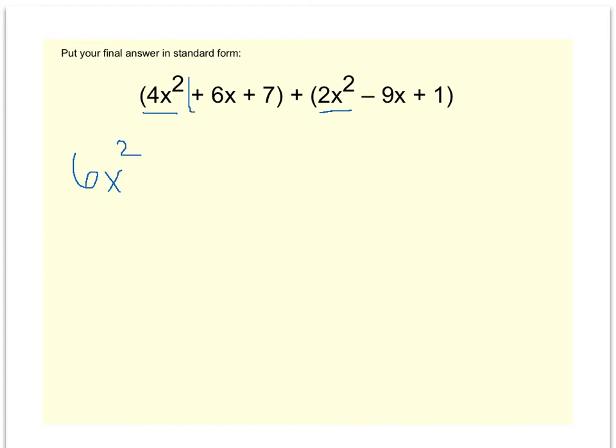We have another pair of like terms. We have a positive 6x and a negative 9x. We know they're like terms because the 6 has an x attached to it and so does the negative 9. Well, 6 plus a negative 9 is negative 3. So when you combine those like terms, you get a negative 3x.